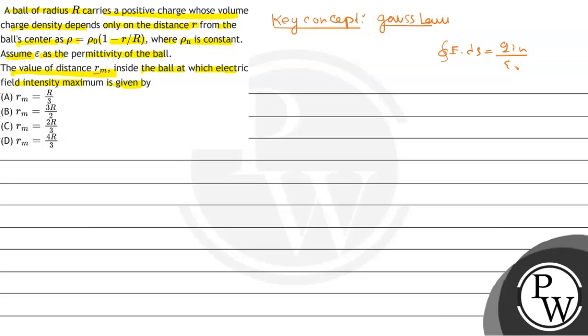The integral of E·dS equals q_in by ε₀. So we have a ball here which has radius R, and here we have an elementary shell. This is our elementary shell of dr thickness at distance r, small r.